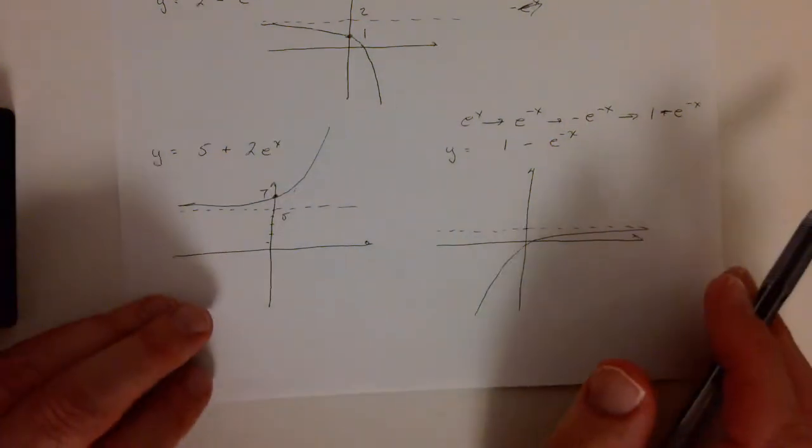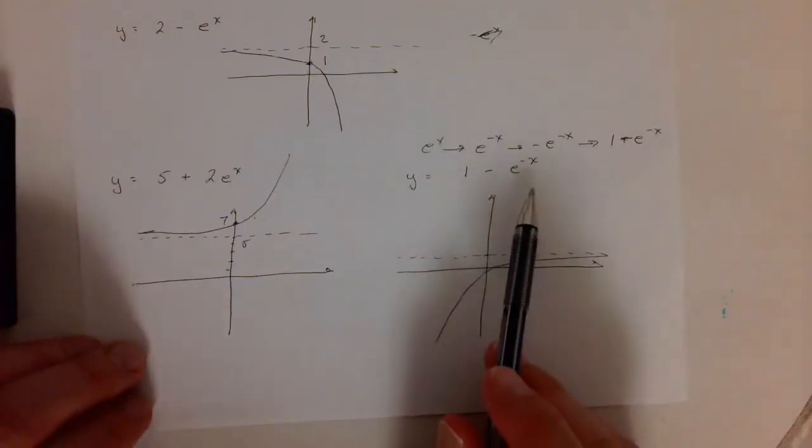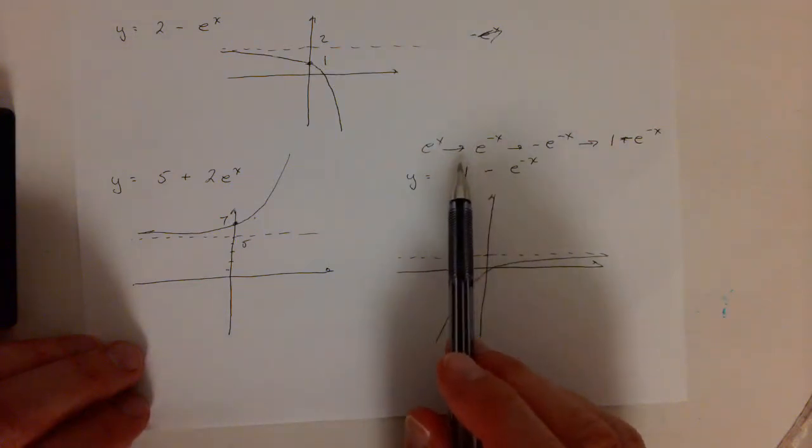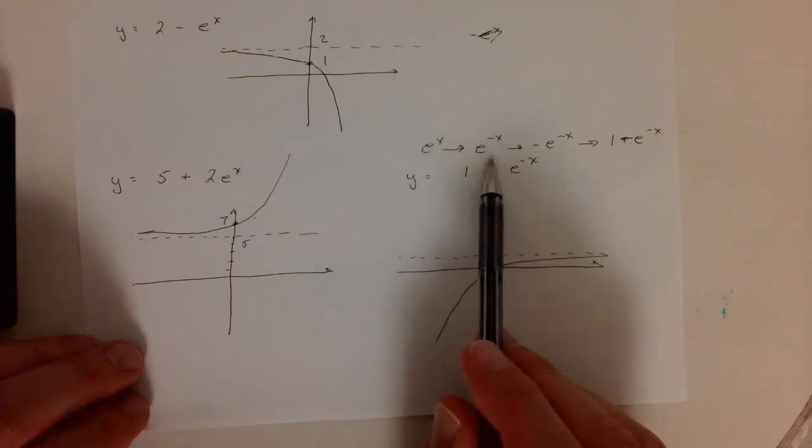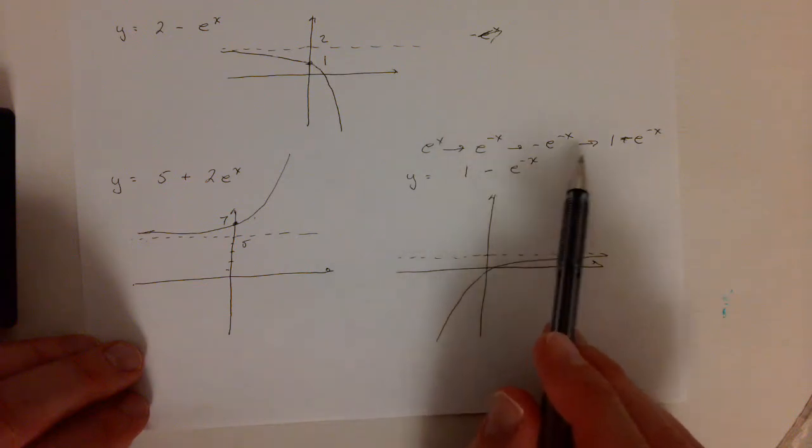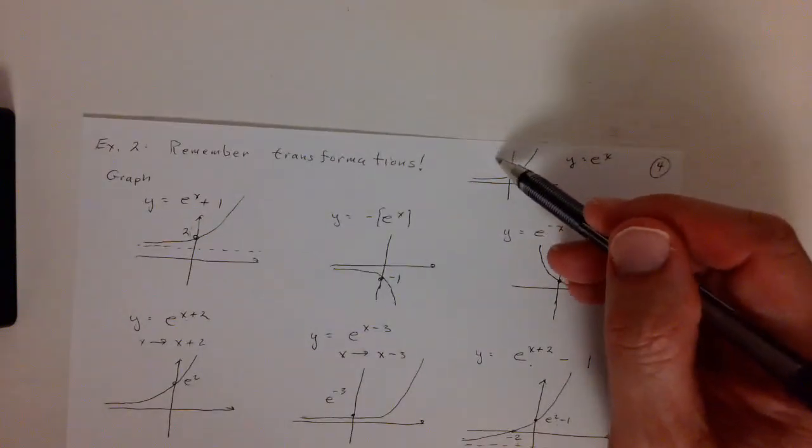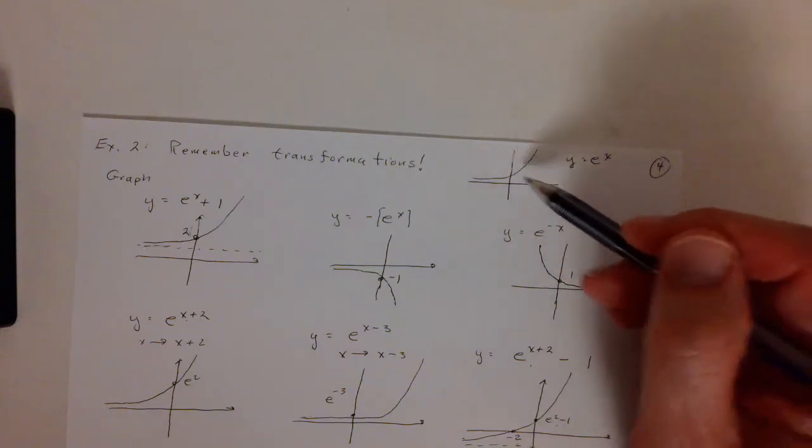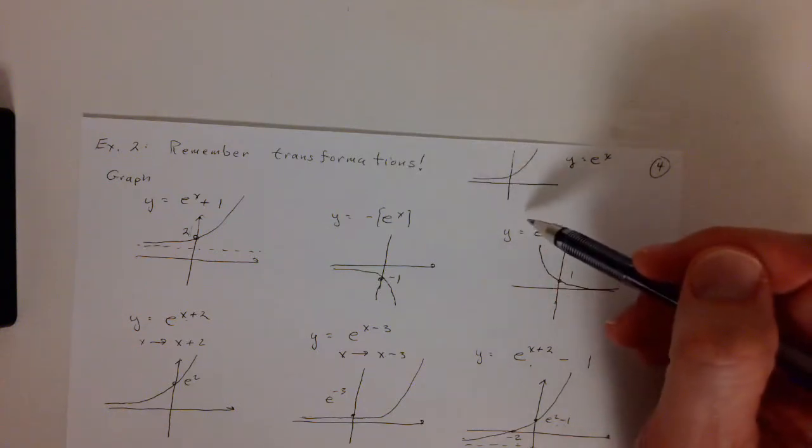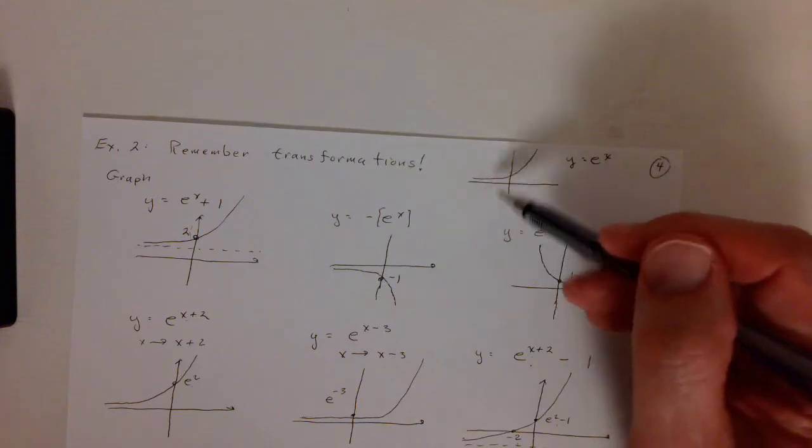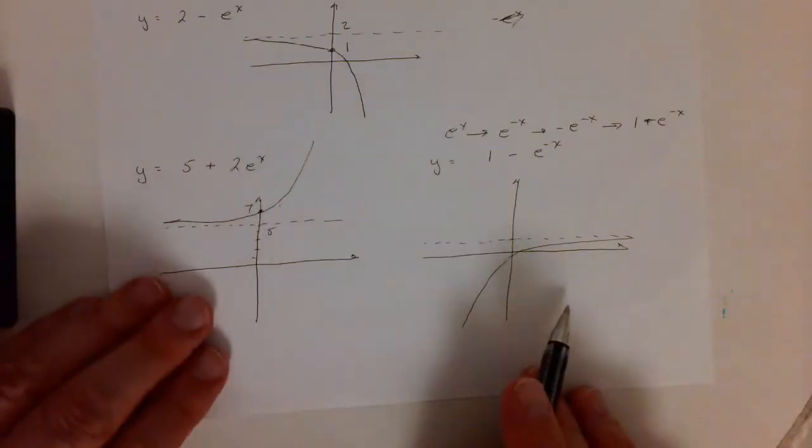And then for this last one, 1 minus e to the minus x, we'd actually do three transformations. We first reflect through the y-axis, then we reflect through the x-axis, and then we shift it up 1. So basically, we take this, we reflect it through the x-axis maybe and do that first. And then we reflect it through the y-axis, and then we shift it up, and that's how we get here.